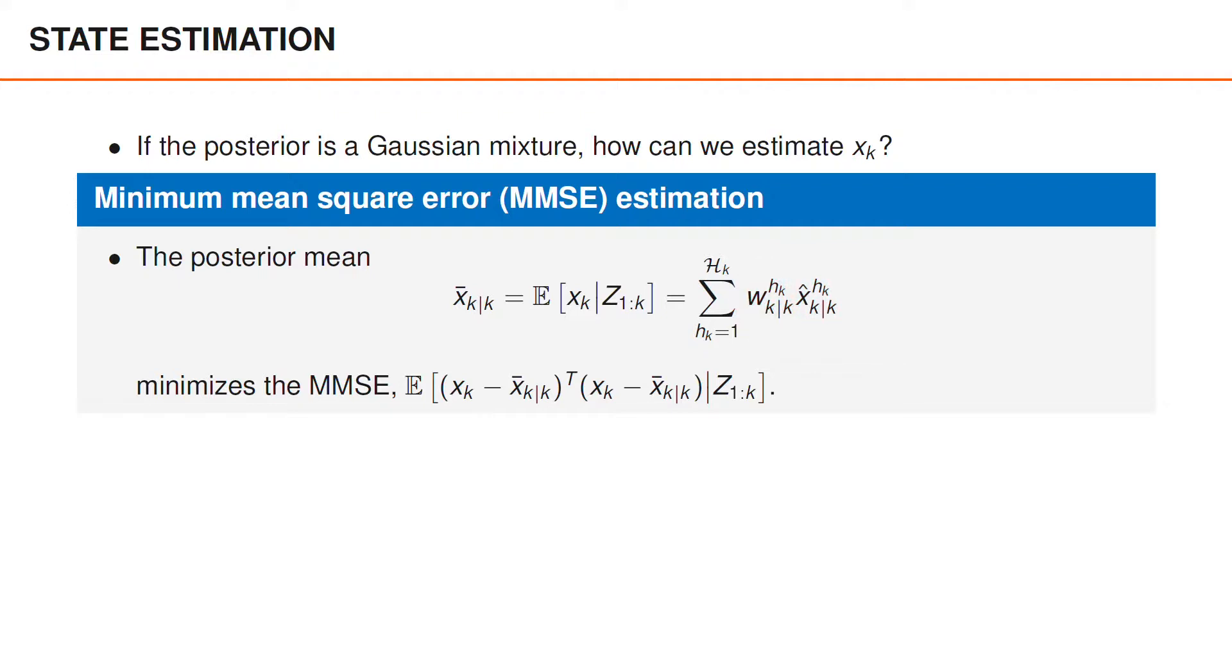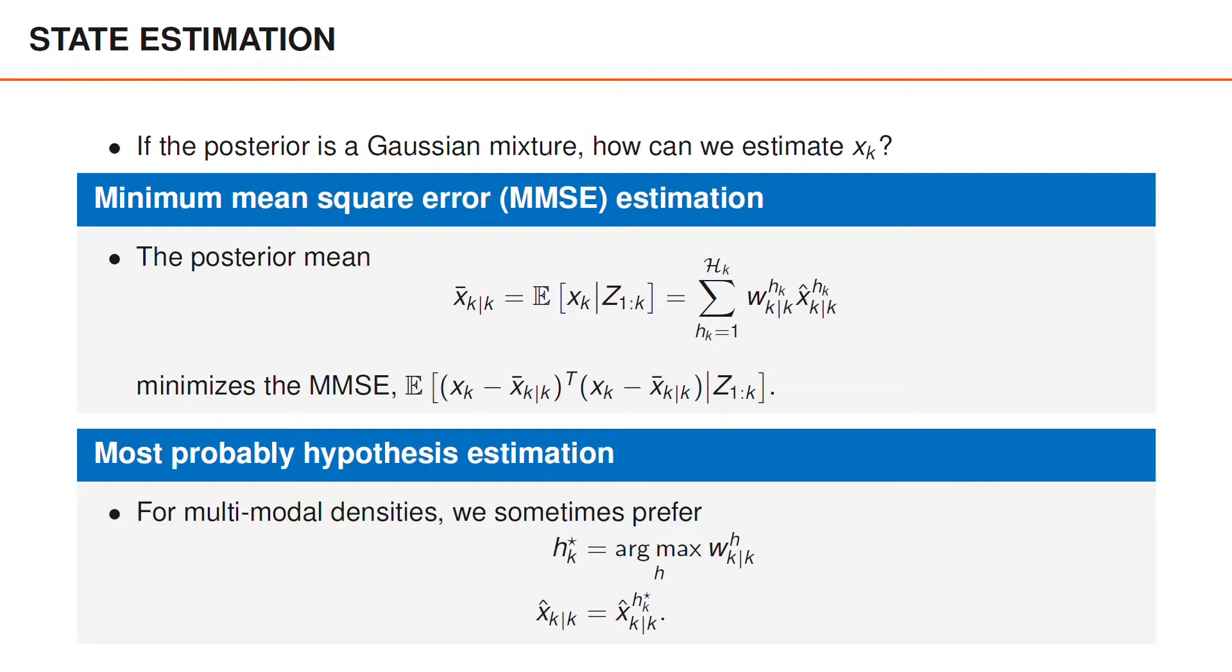Being optimal in terms of mean squared error is sometimes what we want, but a possible disadvantage with the posterior mean is that it may yield an estimate in a region where the posterior density is very small. This is particularly true in situations where we have a density with several well-separated peaks. A possible remedy to this is to use an estimator that first finds the hypothesis with the highest weight, here denoted h_k star, and then use the posterior mean for that hypothesis as our state estimate.